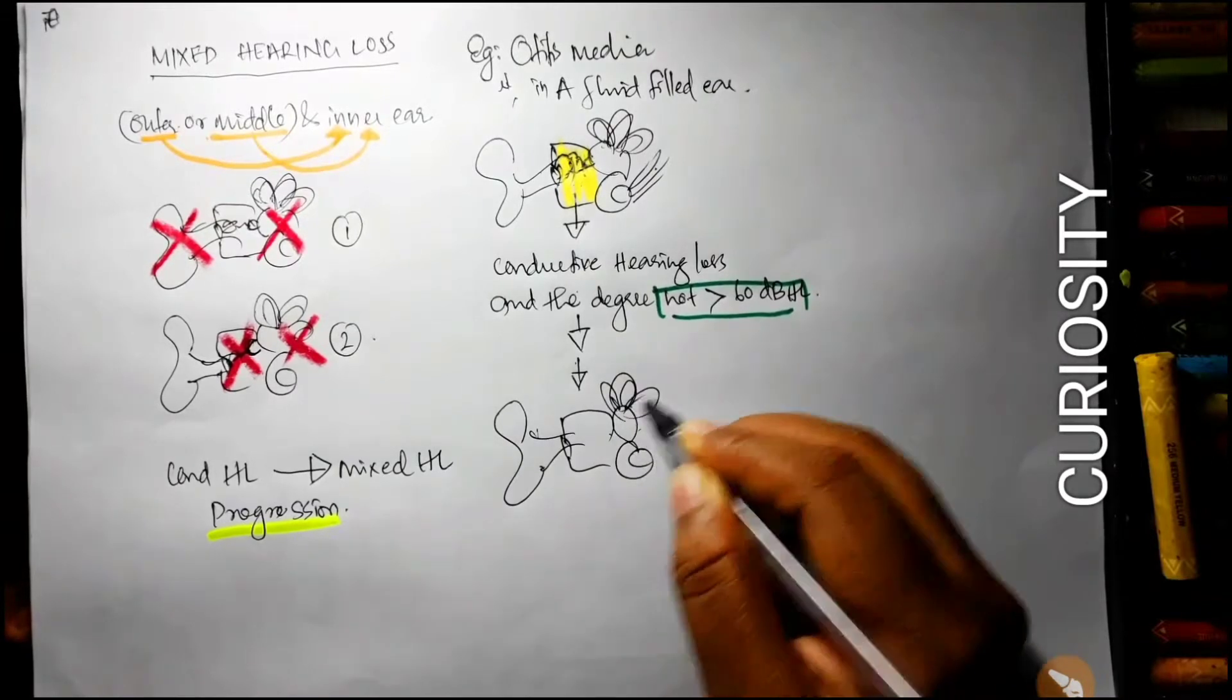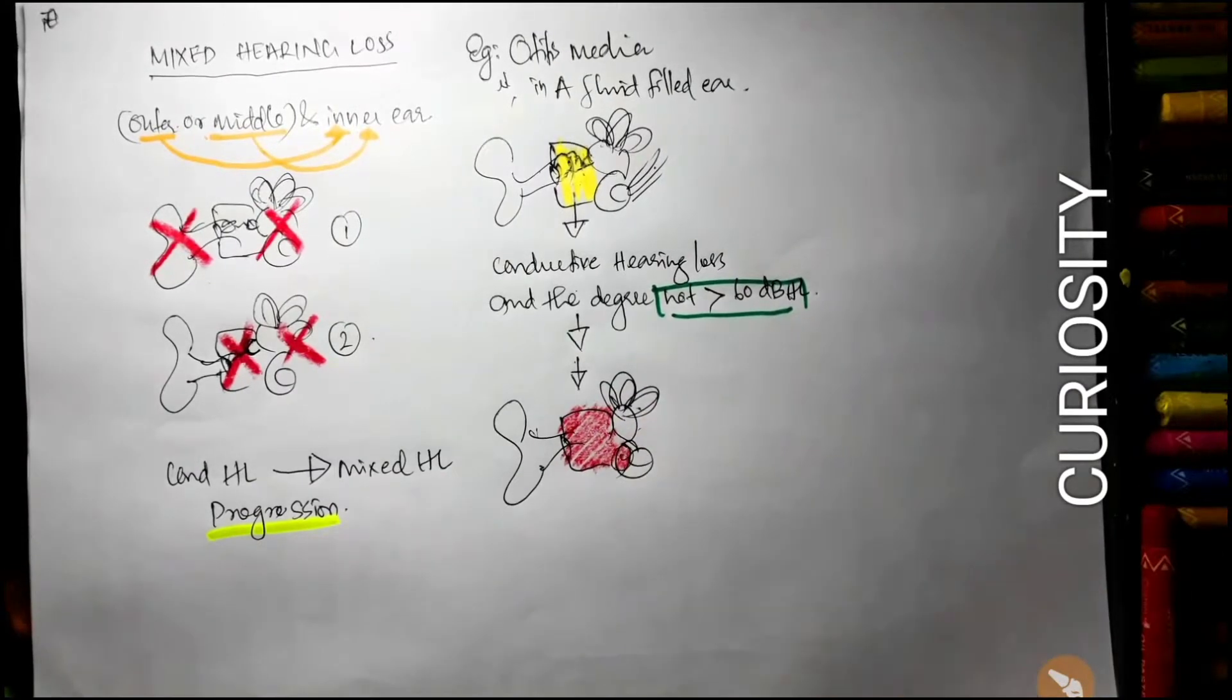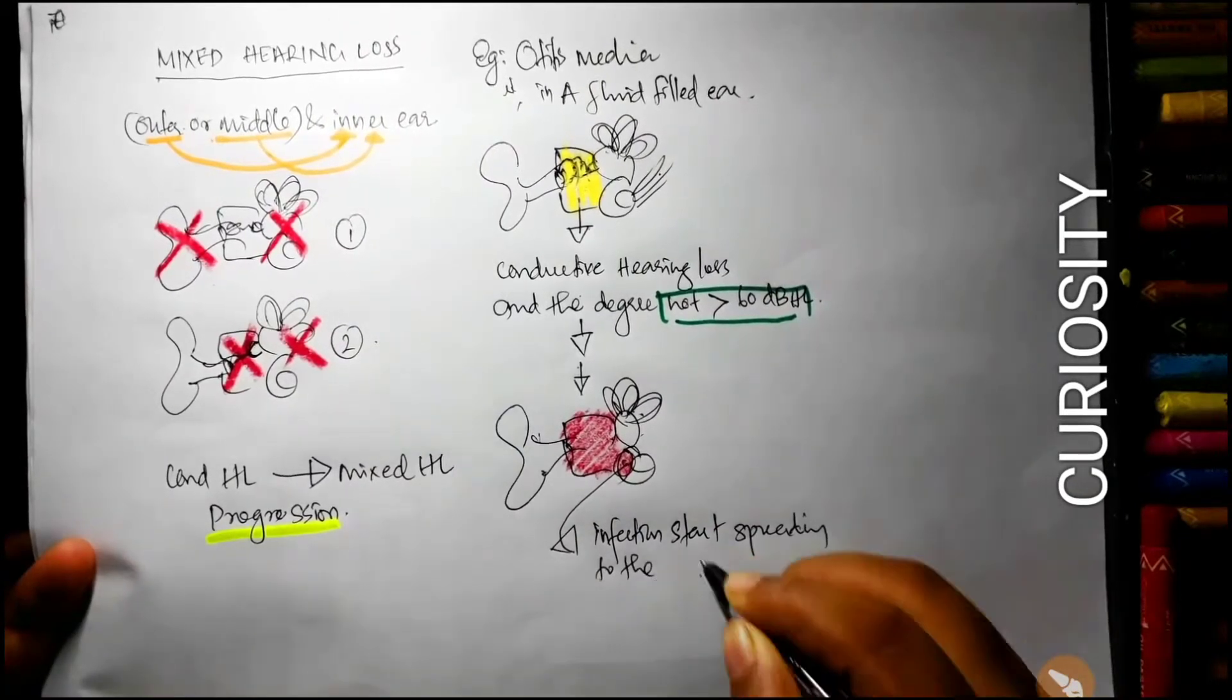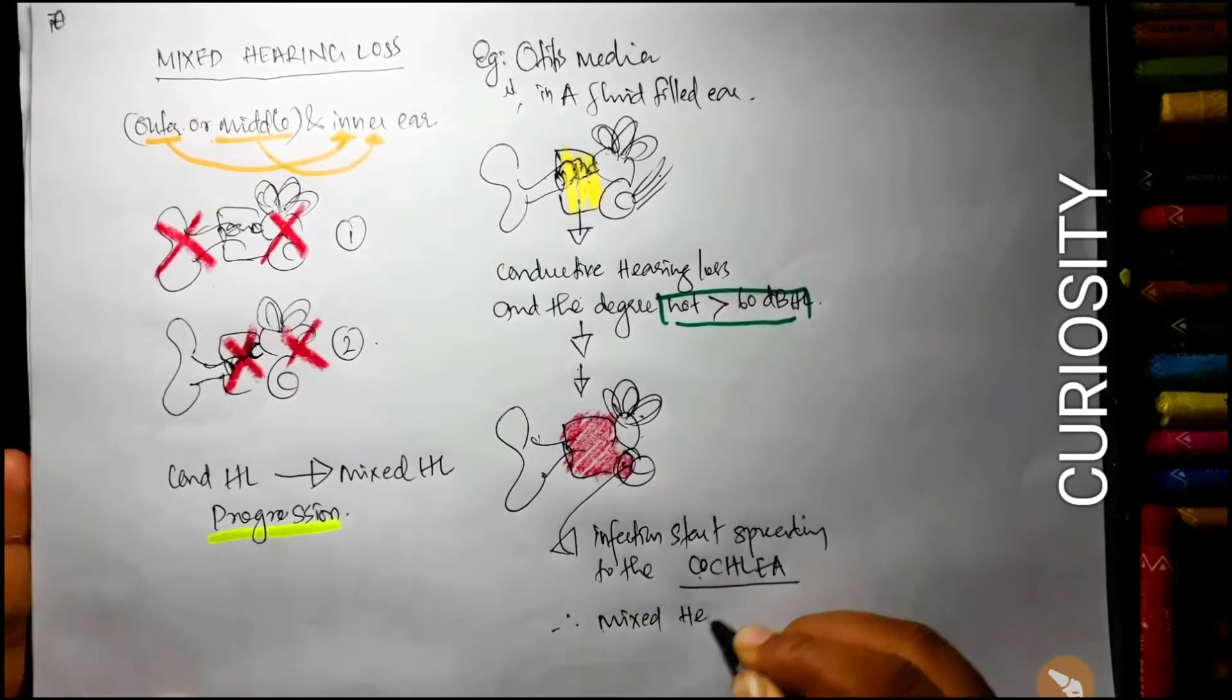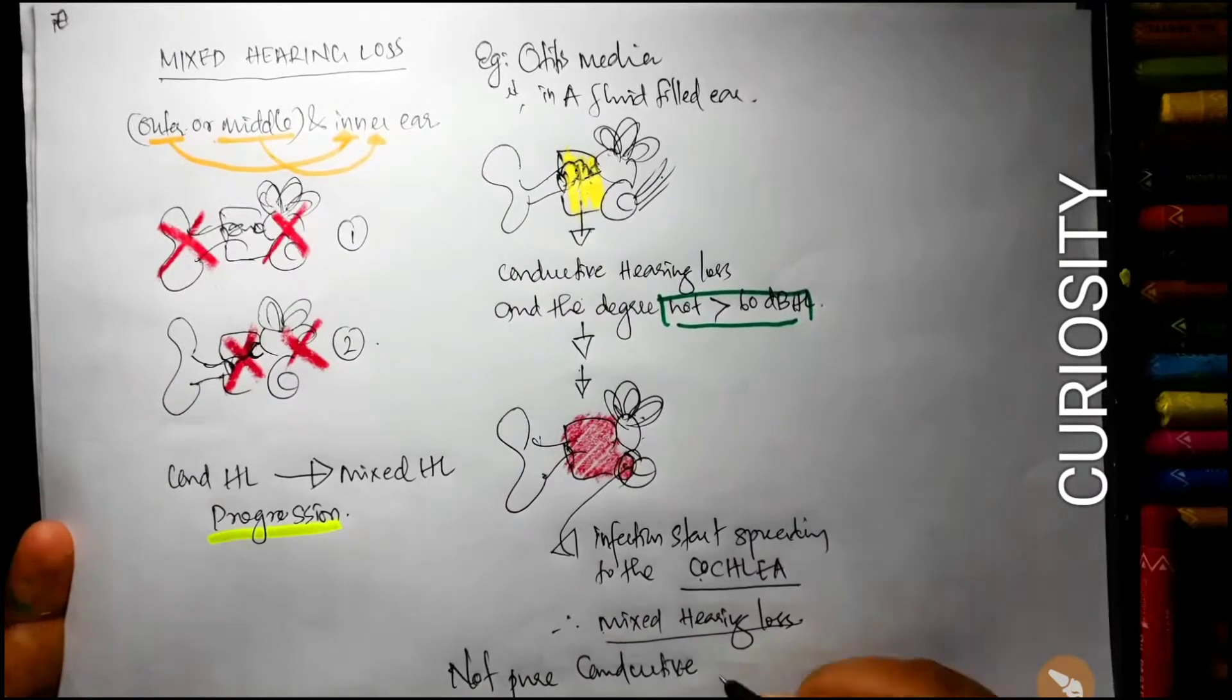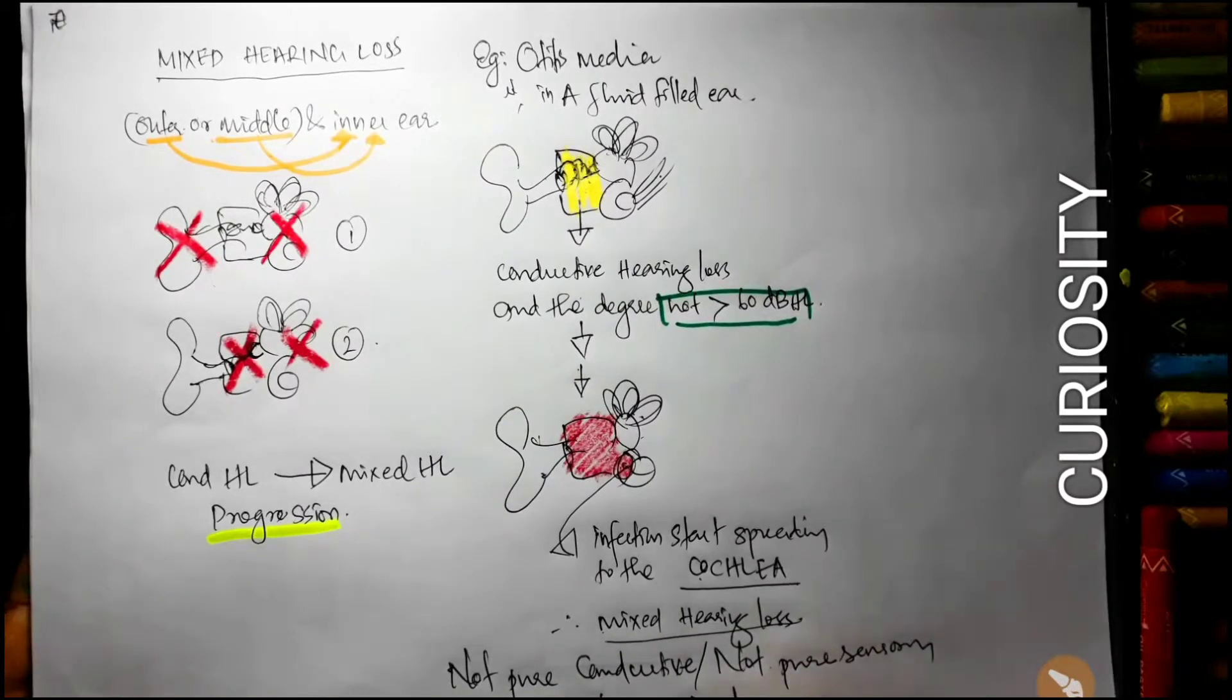In a case of otitis media, this fluid in the middle ear can spread the infection to even the cochlea also. Therefore, it can lead to sensorineural component. This middle ear infection, when it progresses, adds a sensorineural component and thereby becomes a mixed hearing loss. It's not a pure conductive or pure sensorineural case, it's a mixed hearing loss.